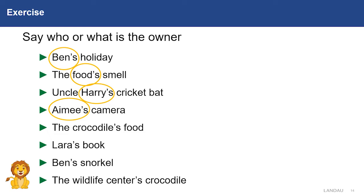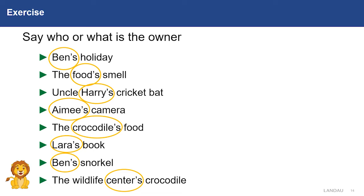The crocodile — in this sentence, the crocodile is the owner of the food. Laura's — in this sentence, Laura is the owner. Ben's — in this sentence, the owner is Ben. Centers — so the wildlife center is the owner of the crocodile.